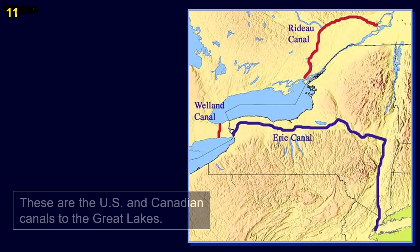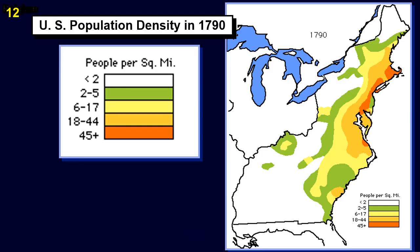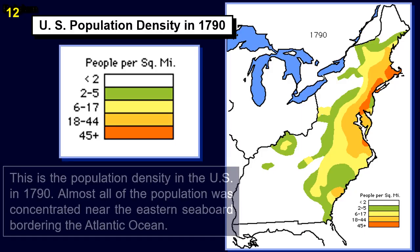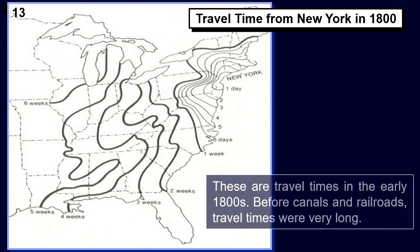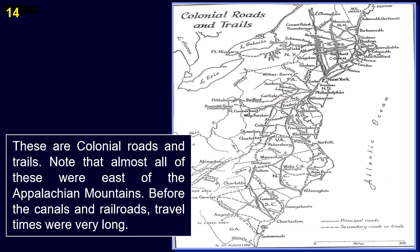These are the U.S. and Canadian canals to the Great Lakes. In 1790, almost all of the population was concentrated near the eastern seaboard bordering the Atlantic Ocean. Before canals and railroads, travel times were very long. Colonial roads and trails were almost all east of the Appalachian Mountains.